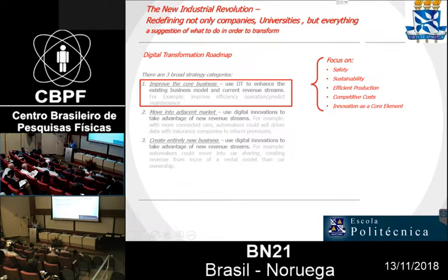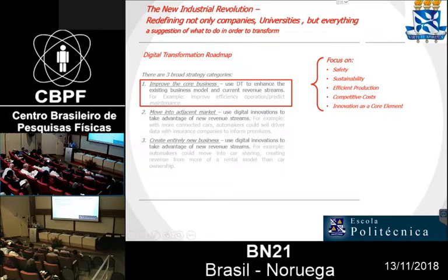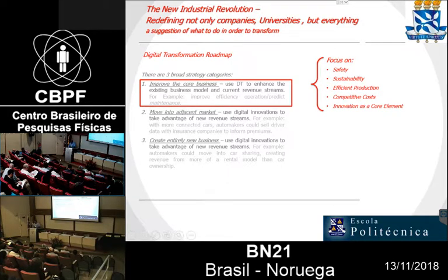It's important to understand that there are many strategies to implement digital transformation. Using automakers as an example: in the first step, digital transformation is used for existing business models. In the second step, you can try to get adjacent markets — for instance, connected cars where automakers sell driver data to insurance companies to inform premiums. And finally, you can move into car sharing, creating revenues from a rental model rather than car ownership — which is a big challenge for automakers now.